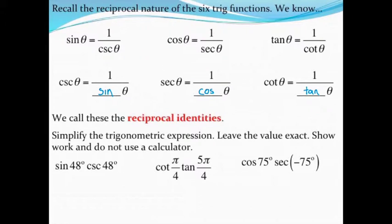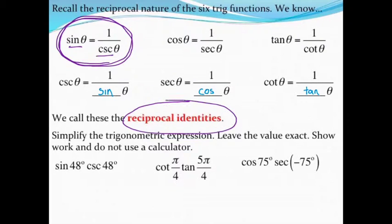Hopefully you're already familiar with the reciprocal identities. For example, you should know that sine is the reciprocal of cosecant, so I can write that as 1 over cosecant, which is the same thing as sine. If you're not familiar with these six ratios or six identities, you may want to pause the video and make note of these. We call these the reciprocal identities, and we can use them to simplify some trigonometric expressions.